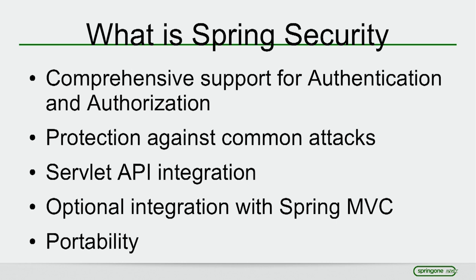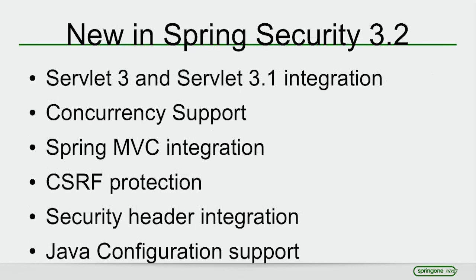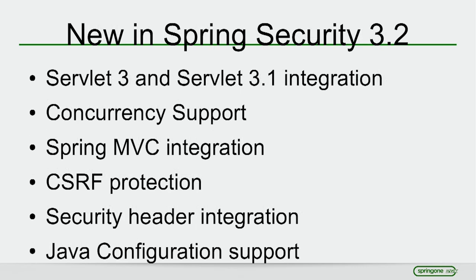Now we'll talk about what's new in Spring Security 3.2. There's added support for Servlet 3 and 3.1 integration. Servlet 3 adds new methods to the HTTP servlet request and response. For example, HttpServletRequest now has a login method that passes the username and password to Spring Security's authentication manager. If authenticated, the user will be established; otherwise an exception is thrown. There's also a logout method and an authenticate method that determines if the current user is authenticated and sends them to a login page if not.